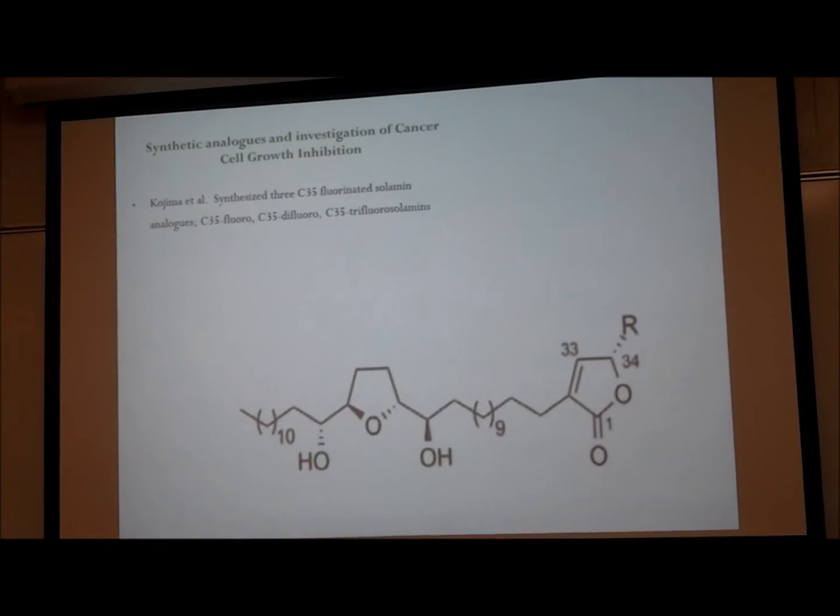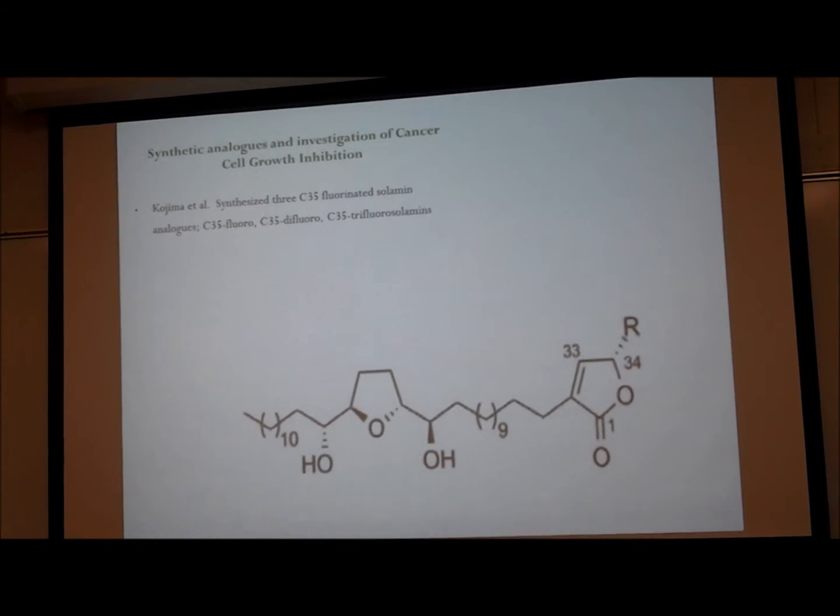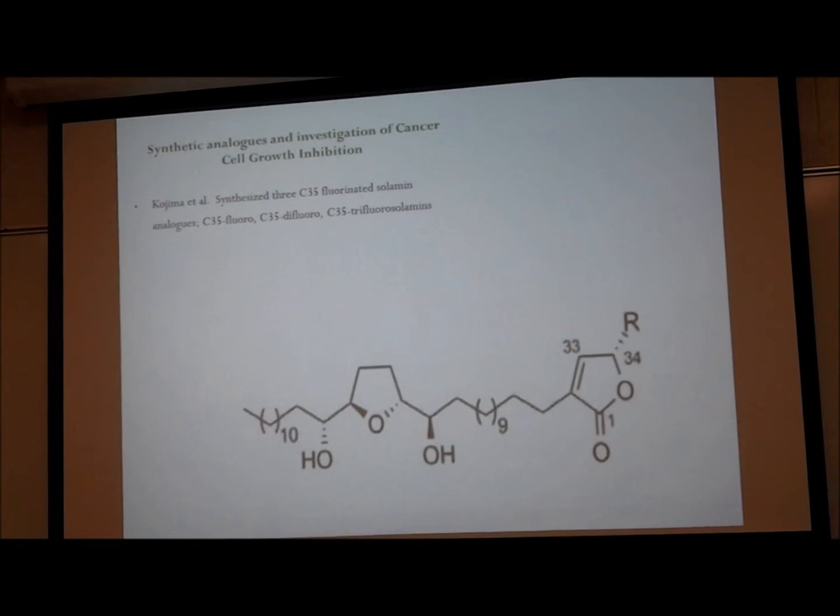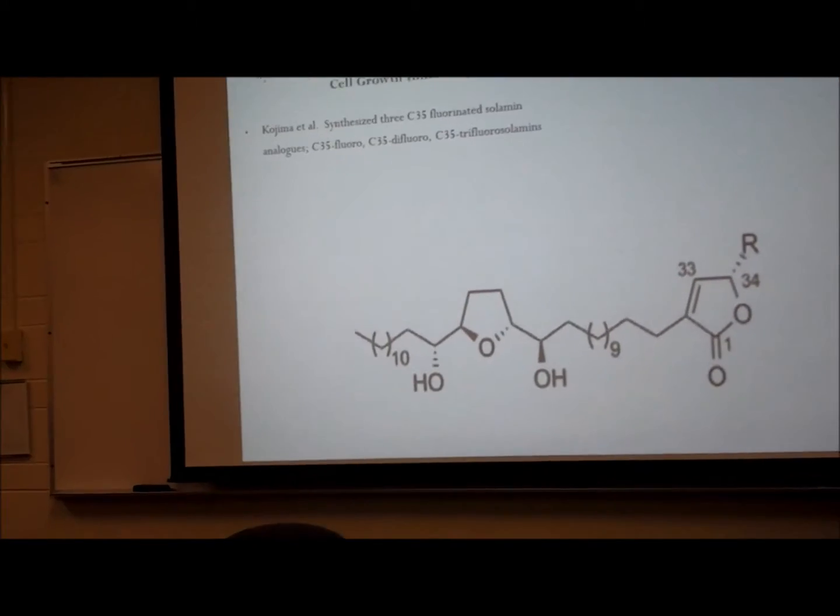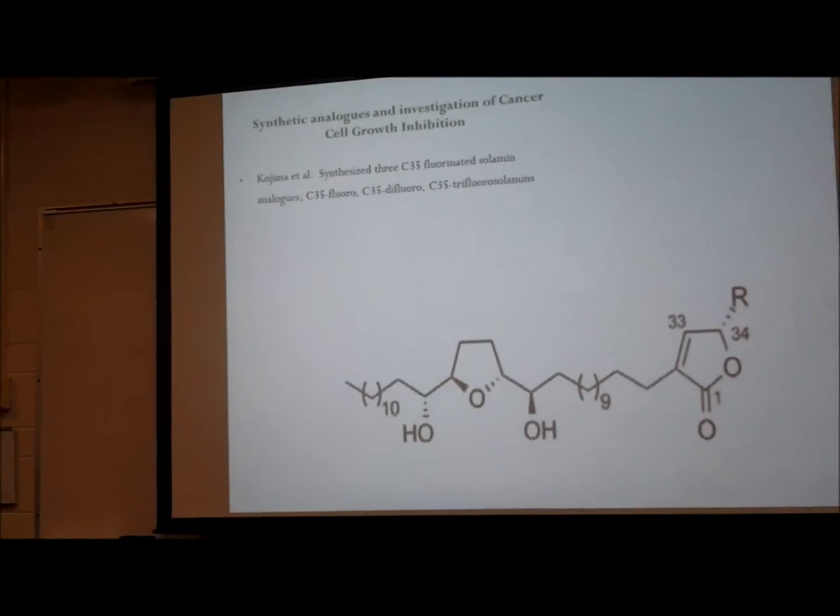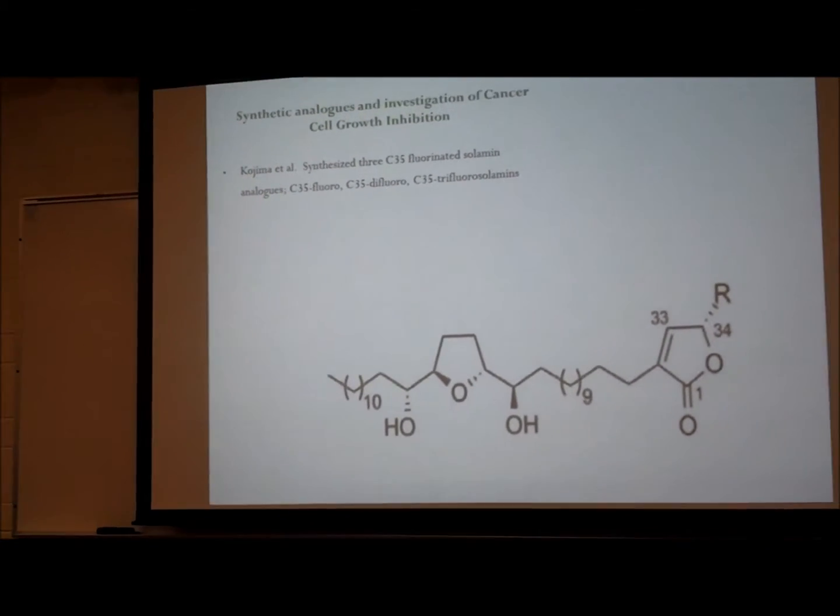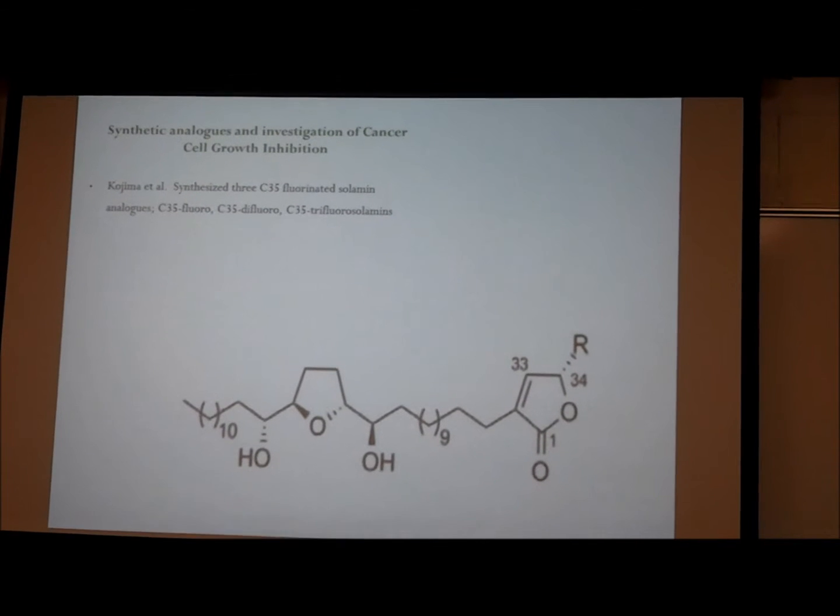To examine the inhibiting effect on human cancer cell lines, researchers synthesized three C-35 coordinated solamin analogs: the C-35 monofluoro, the C-35 difluoro, and the C-35 trifluoro solamin.